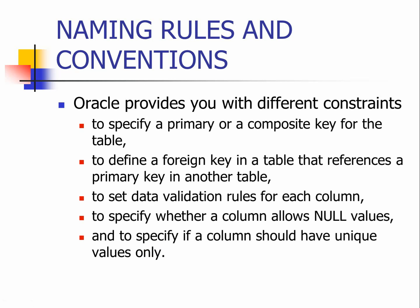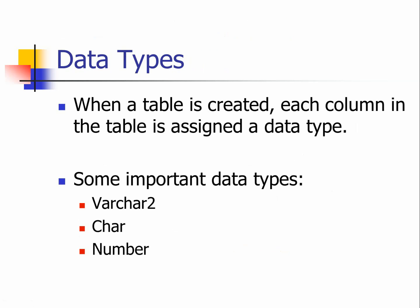Oracle provides the following different constraints. You can specify a primary key, and sometimes it is a composite primary key indicating more than one attribute is underlined. You can define a foreign key that references another table's primary key. You can set data validation — for example, you cannot work more than 40 hours. You can specify whether a column can be null, or specify that a column should have unique values only. If you set up a primary key constraint it is automatically unique, but for non-primary-key attributes you can still enforce uniqueness.